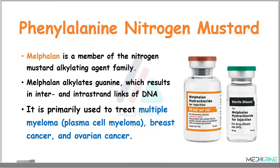Another example of alkylating agents is phenylalanine nitrogen mustard, also known as melphalan. Melphalan is a member of the nitrogen mustard alkylating agent family and works by alkylating guanine, resulting in inter- and intrastrand DNA links. Primarily, we use it to treat multiple myeloma, which is a plasma cell myeloma, as well as breast and ovarian cancers.